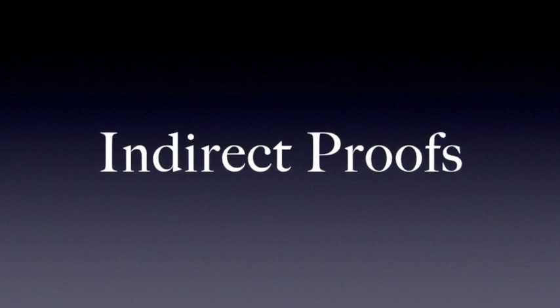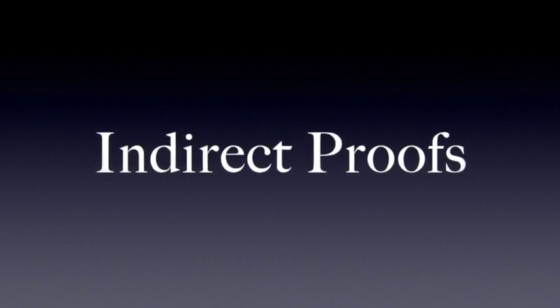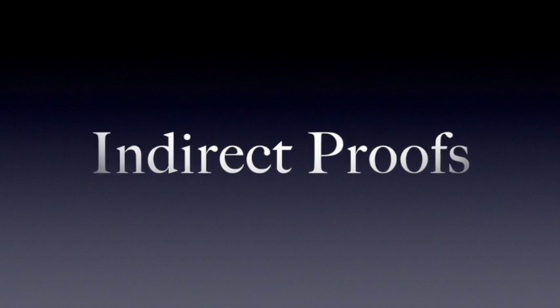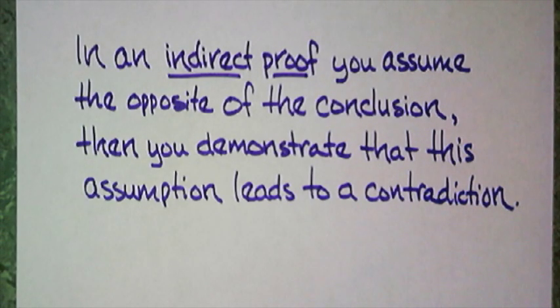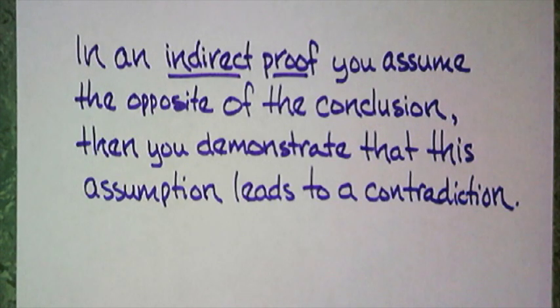Today we are talking about indirect proofs, and like before, I will begin with a definition. In an indirect proof, you assume the opposite of the conclusion, then you demonstrate that this assumption leads to a contradiction.